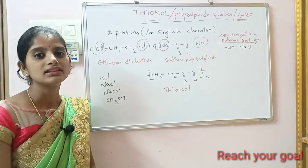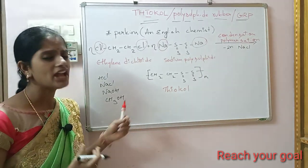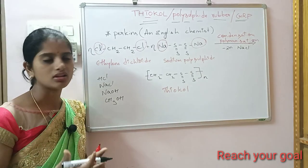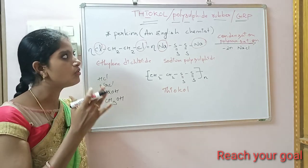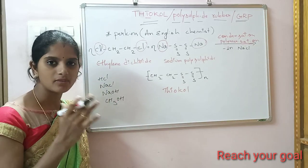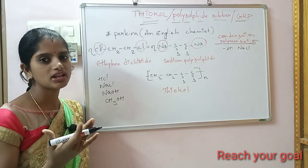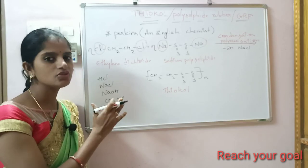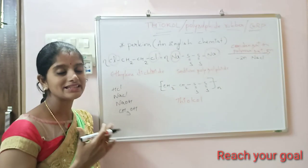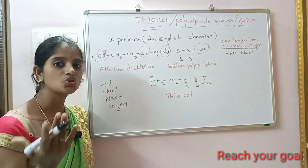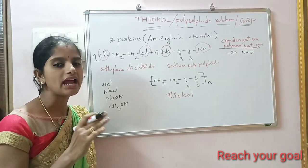Properties of Thiokol rubber: first, it possesses strength and impermeability to gases. Second, Thiokol cannot be vulcanized, so it cannot be used to form hard rubber. Third, Thiokol rubber possesses high resistance to heat, sunlight, ozone, mineral oils, and also fuel.